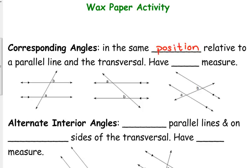With your blue paper and your wax paper, what you can do is take the wax paper and put that parallel line on the bottom — whichever ones overlap are corresponding angles. So 1 and A are corresponding angles, 2 and B are corresponding angles, 3 and C, and 4 and D are corresponding angles. They have the exact same measure because they are the exact same angle.